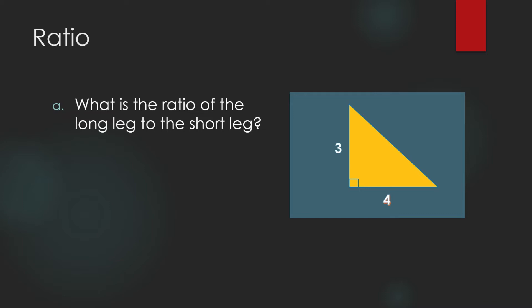What is the ratio of the long leg to the short leg? It is 4 over 3, or we can write it as 4 is to 3. We can also write it in decimal form: the ratio of the long leg to the short leg is 1.25, or 125%.